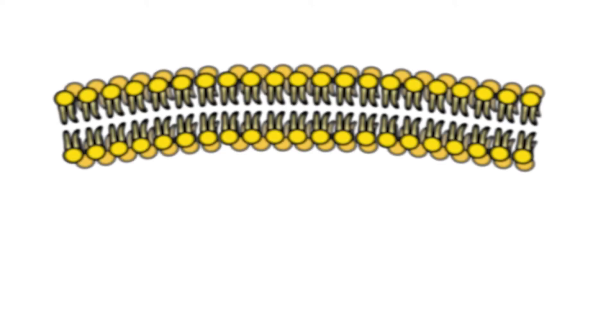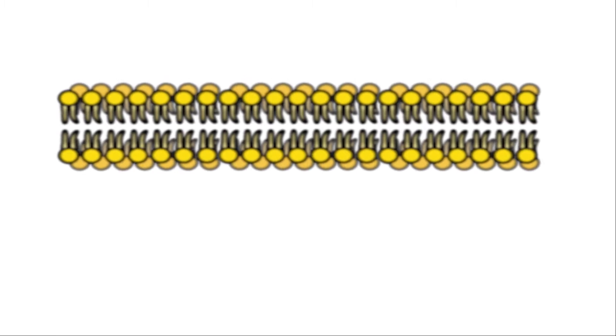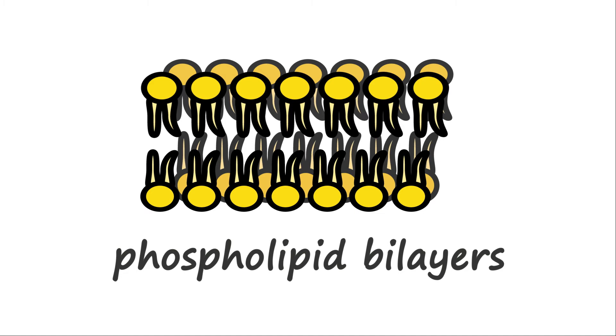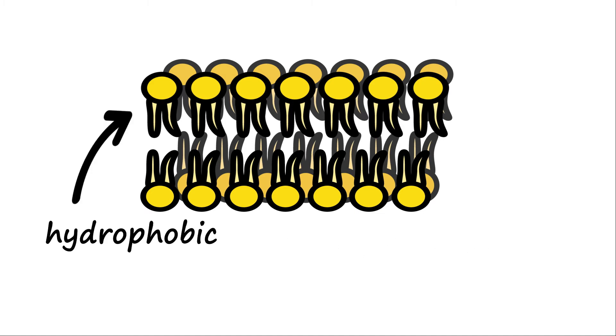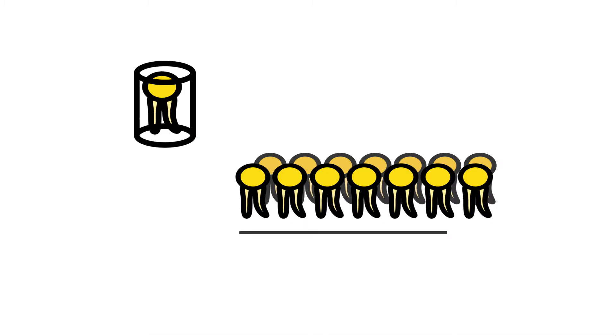In contrast to the micelle-forming SDS, biological membranes are made of phospholipid bilayers that can be considered almost planar. The phospholipids in a bilayer are also amphiphilic, with the hydrophobic tails buried inside, but they have a more cylindrical shape, which allows for a planar membrane architecture with low curvature.